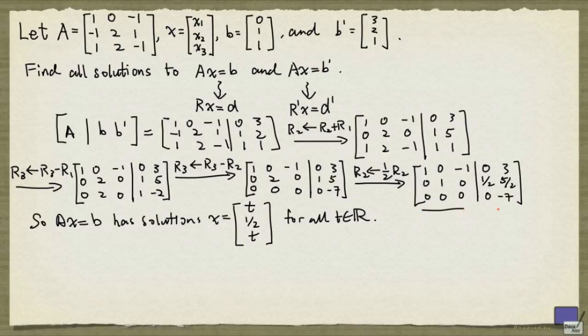But if we look at the first three columns plus the last column, we have, in the third row, zeros in the columns corresponding to the variables, and non-zero for the right-hand side variables. So there is no solution. So we conclude that Ax equal to b' has no solution.